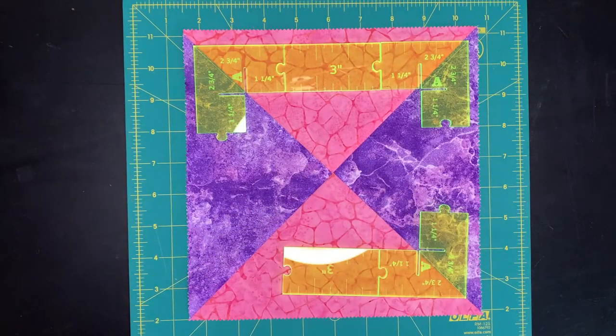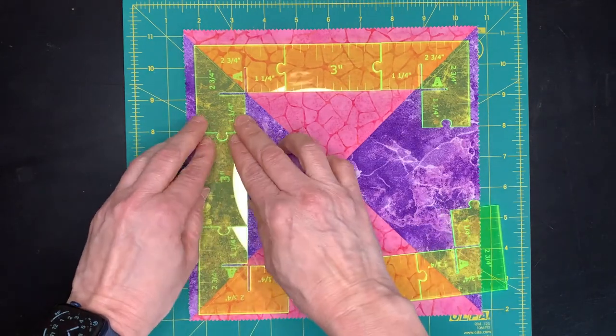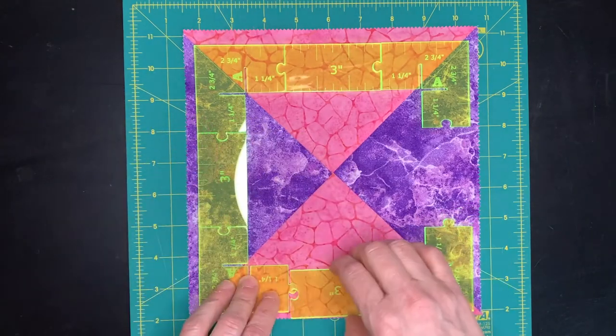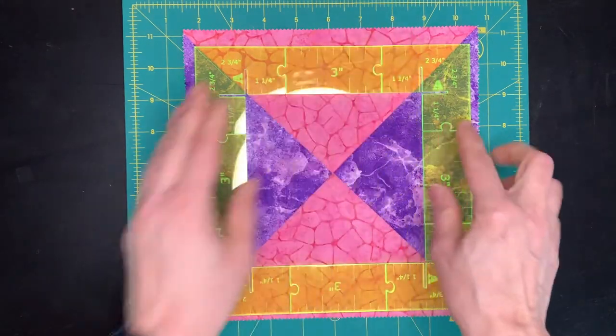I've put some of these pieces together in advance to make it go a little quicker. So we've got our three inch, our A, three inch, A, three inch. Put it all together.